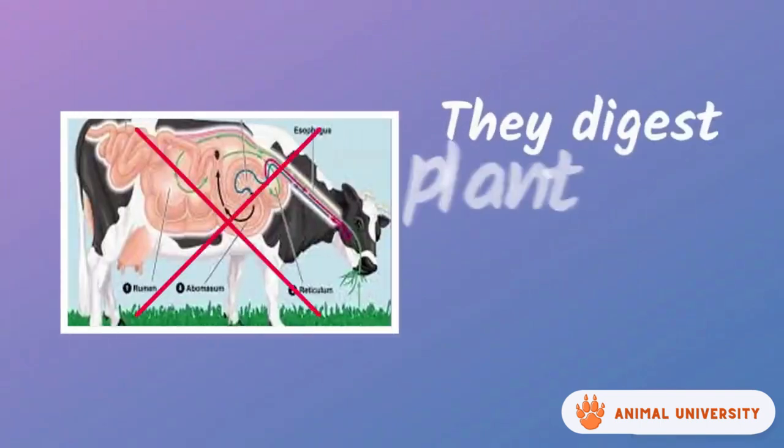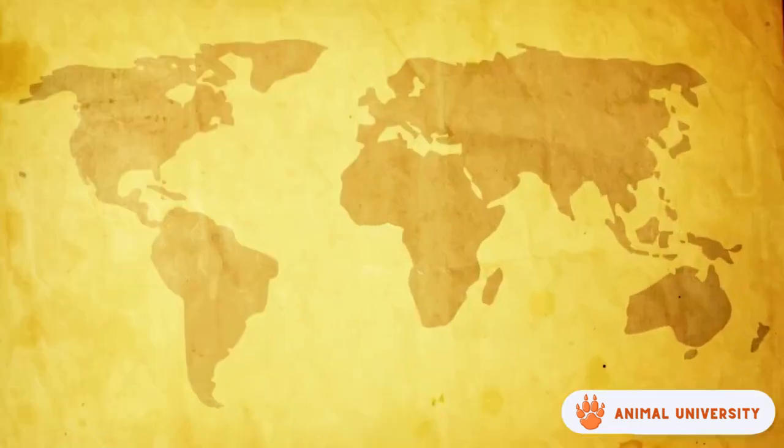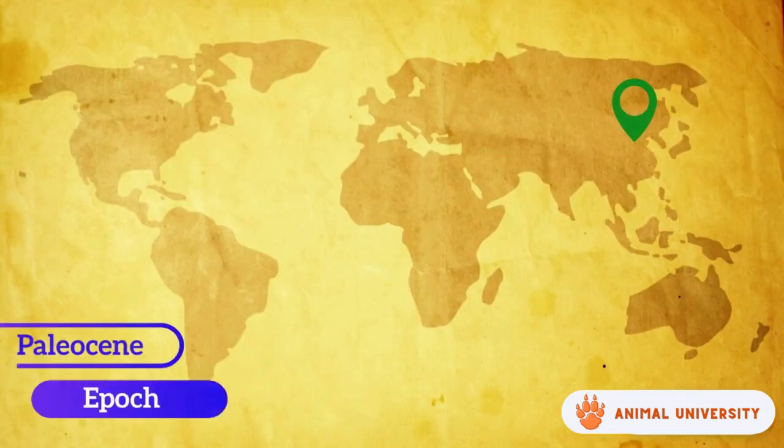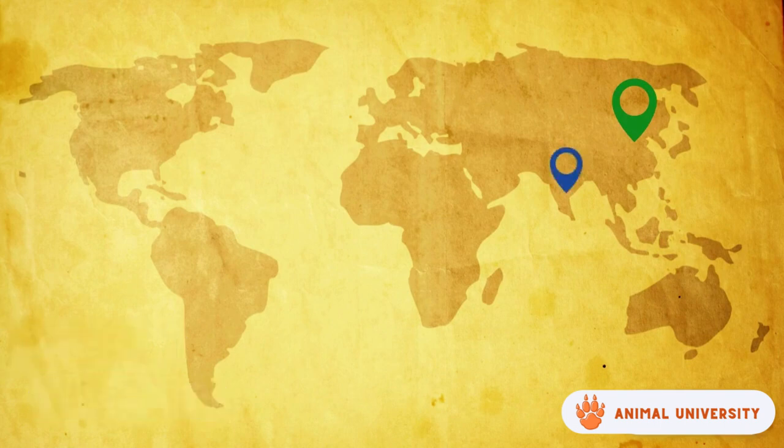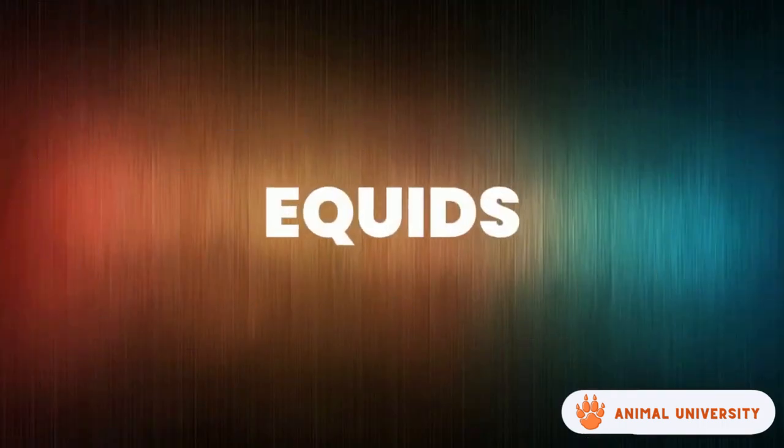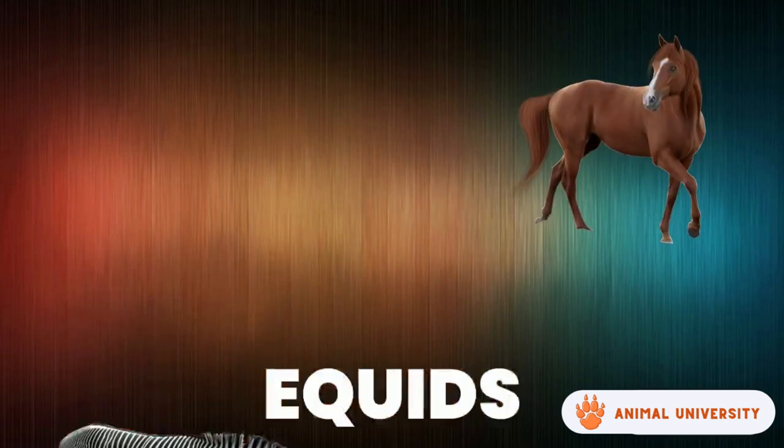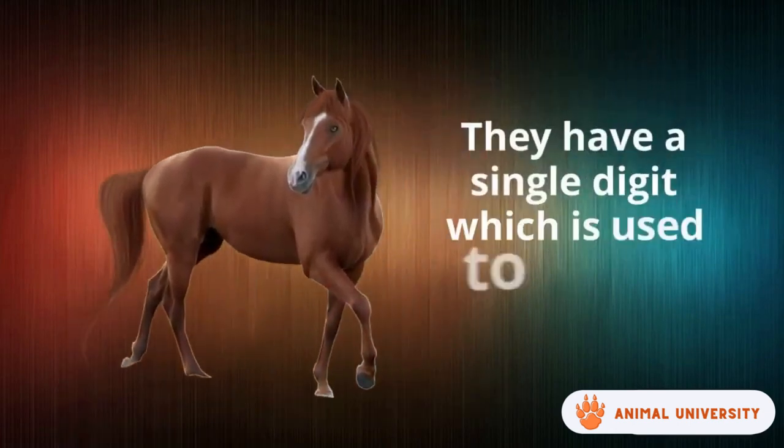Just like artiodactyls, the remaining digits are useless. Instead of having multi-chambered stomachs, they digest plant cellulose in their intestines. They originated in East Asia during the Paleocene epoch and reached Africa through a rafting event and South America during the Great American Exchange. Equids are by far the most popular perissodactyls.